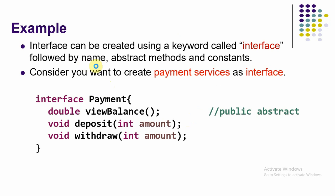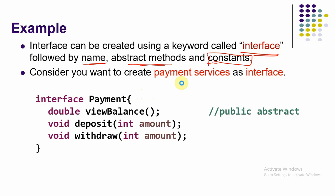An interface is created with the keyword 'interface' followed by the name of the interface. Inside, we can include abstract methods. We can also put data, but the data must be a constant — it cannot be modified, only used.